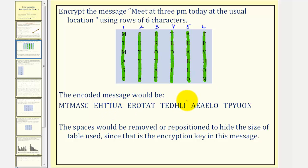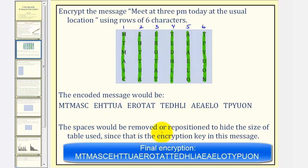But there is one more thing, the spaces would be removed or repositioned to hide the size of the table used since that is the encryption key in this message. So we wouldn't leave it in this form here, because if left in this form, we could tell the message was encrypted using rows of six characters.